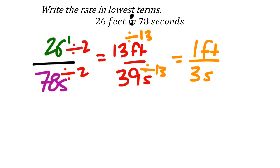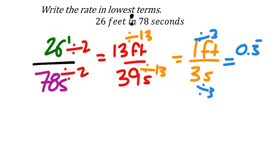This is itself a unit rate since one of the values is 1. If we wanted the other unit rate, we'd divide both by 3, giving 0.3 repeating feet per second. But the 1 foot to 3 seconds is what they want on the homework. Checking in the calculator: 26 over 78 gives us one-third.